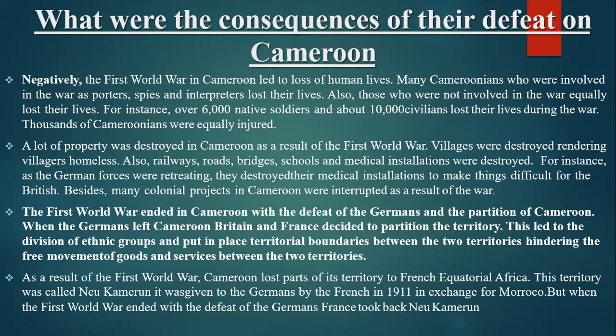The First World War ended in Cameroon with the defeat of the Germans and the partition of Cameroon. When the Germans left, Britain and France decided to partition the territory, which led to the division of ethnic groups and the establishment of territorial boundaries between the two territories, hindering free movement of goods and services. Also, Cameroon lost part of its territory to French Equatorial Africa — the territory called New Cameroon, given to the Germans by France in 1911 in exchange for Morocco, was taken back by France after the German defeat.